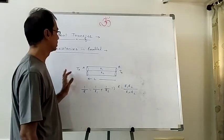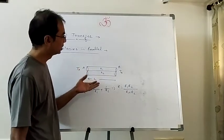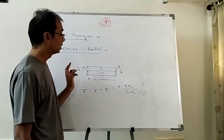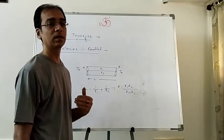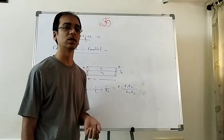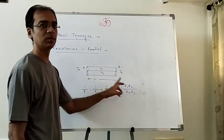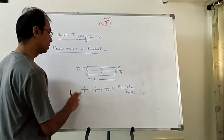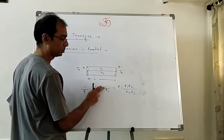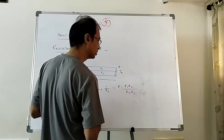Let us see resistances in parallel. In parallel, we do it the same way as in current electricity. In parallel connection in current electricity, what was common between the two conductors was potential difference. So here, what will be common is temperature difference T_A and T_B. In parallel connection, resistance is written as 1/R = 1/R1 + 1/R2, or net resistance R1·R2/(R1+R2).